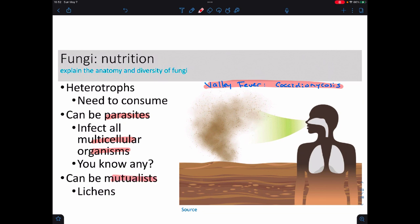But we also know that they can be mutualists. So a famous example of these would be the lichens. If you've ever gone hiking and seen lichens or that little crusty stuff on trees and rocks, that's actually an algae and a fungus together.